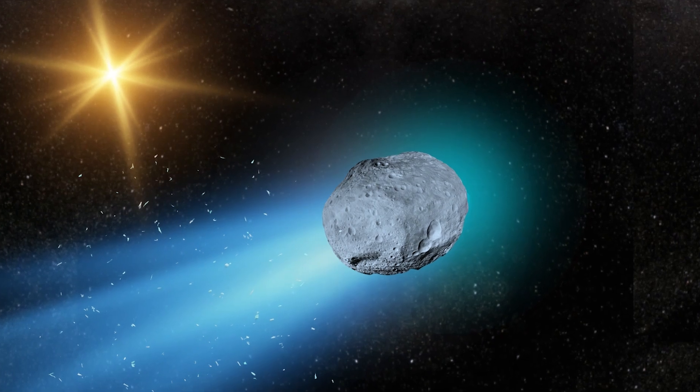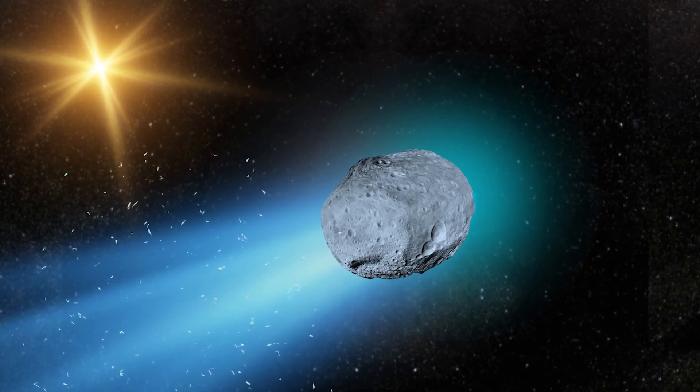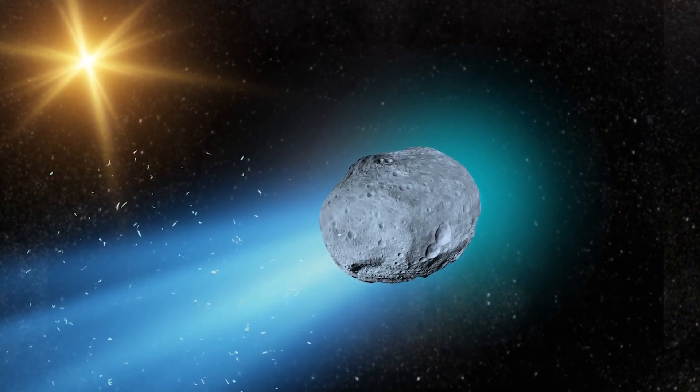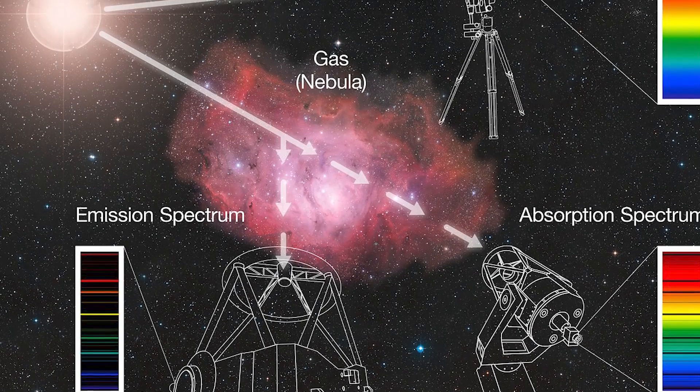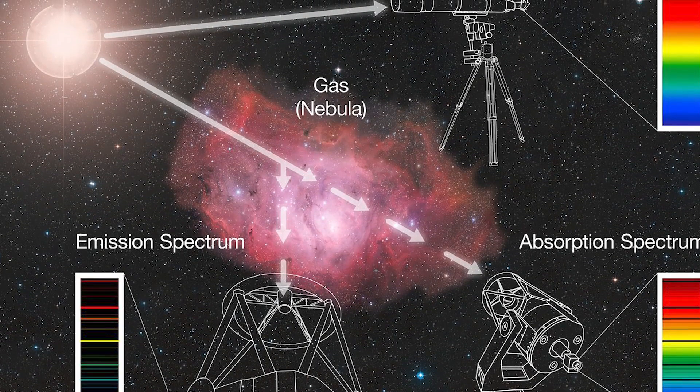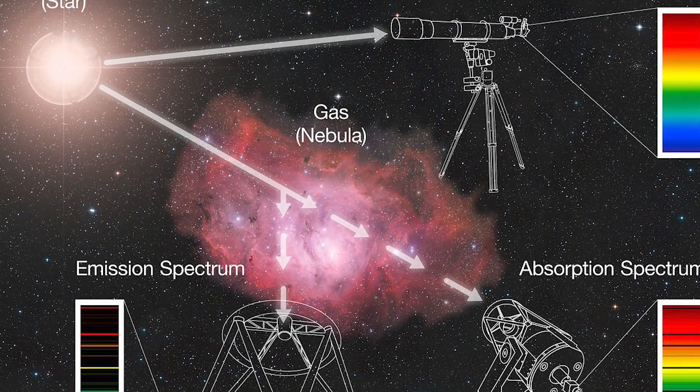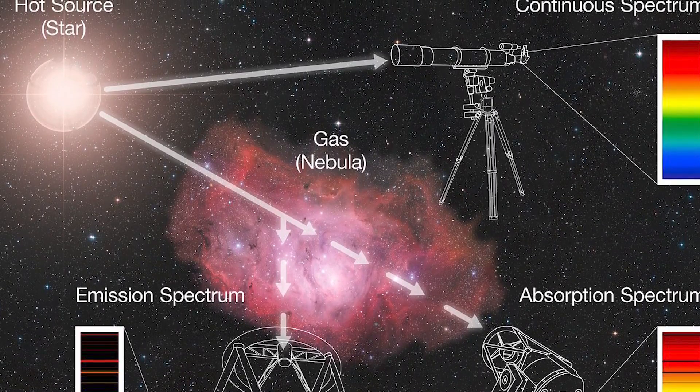So what will we test? As 3I Atlas approaches the sun, sublimation should intensify. That means more gas, more dust, and a brighter coma. Spectroscopy will search for carbon monoxide, carbon dioxide, ammonia, and trace metals that mark where and when its ice formed.